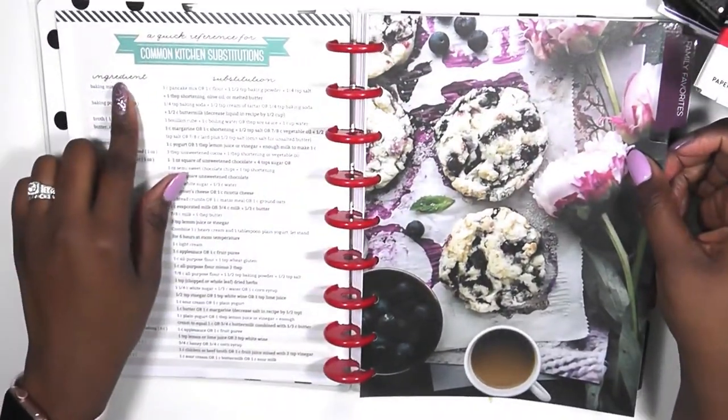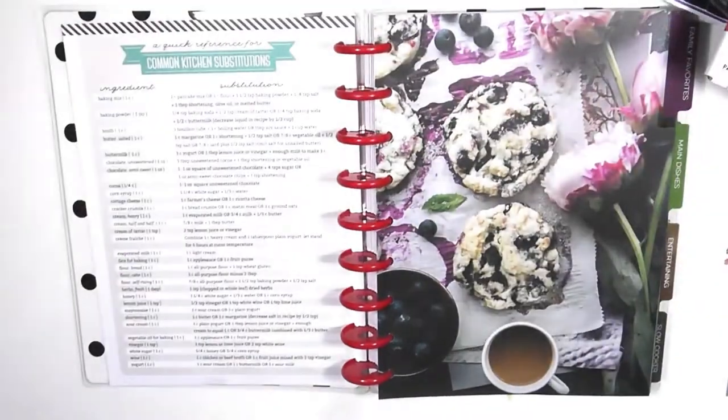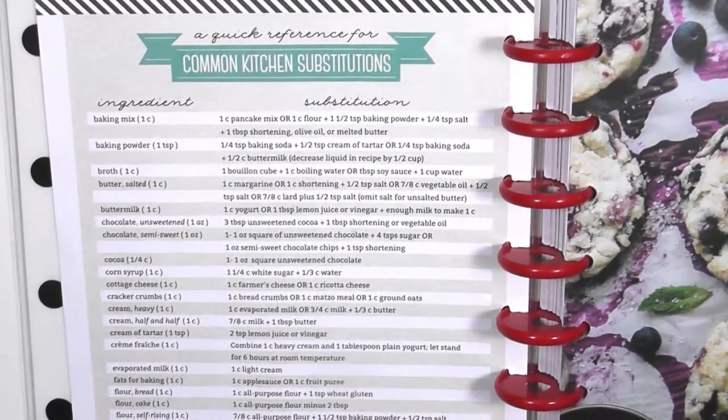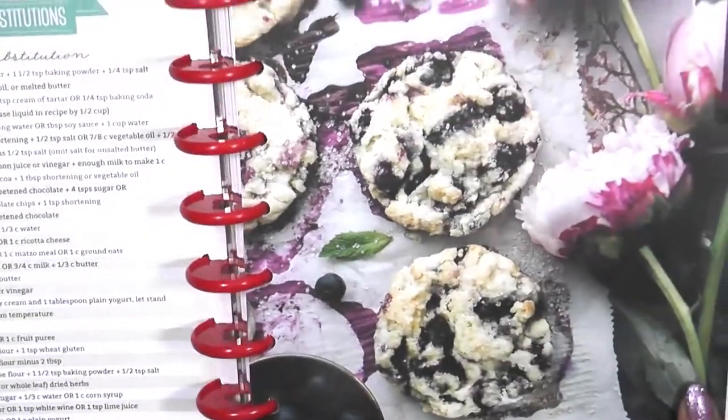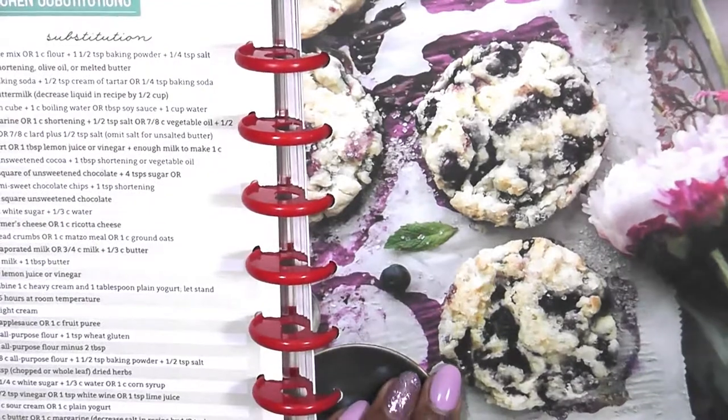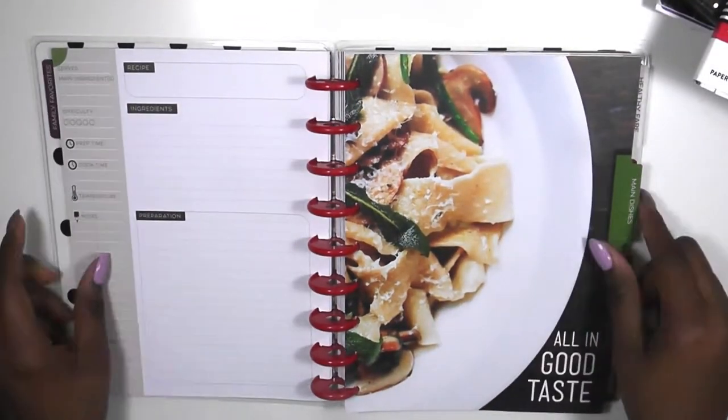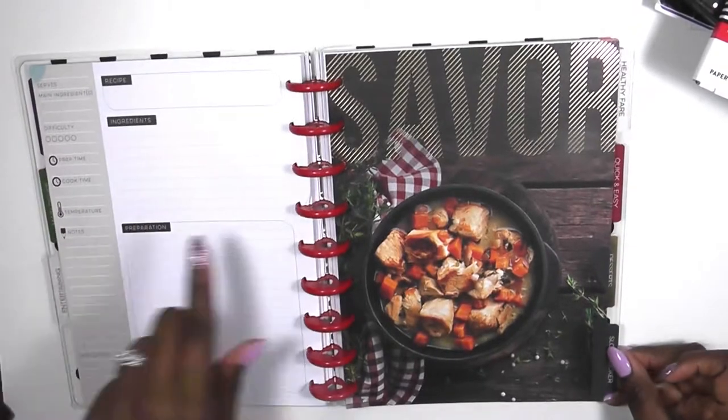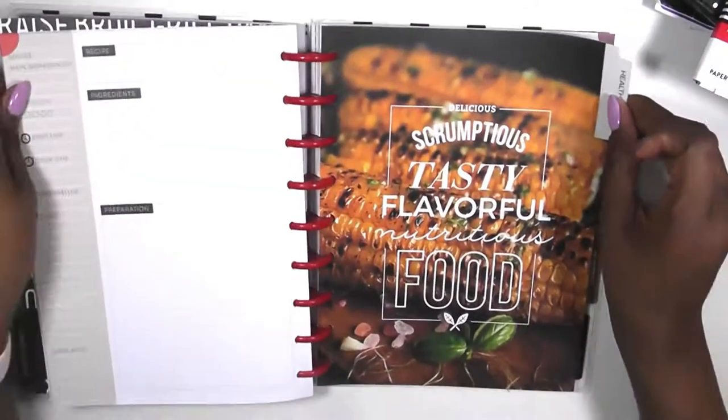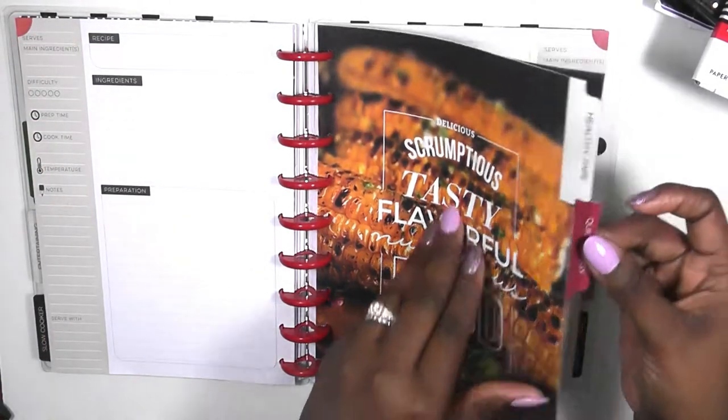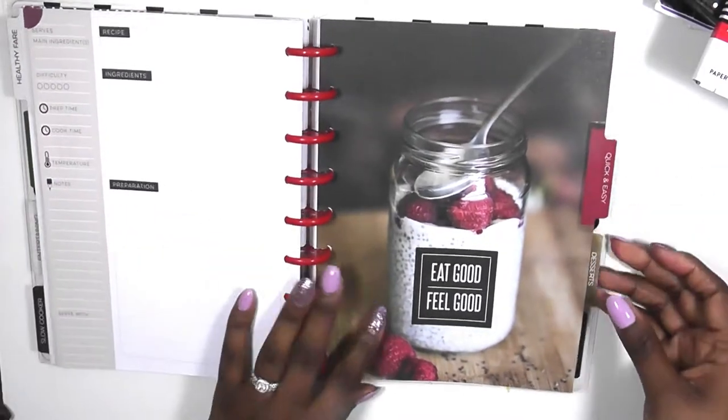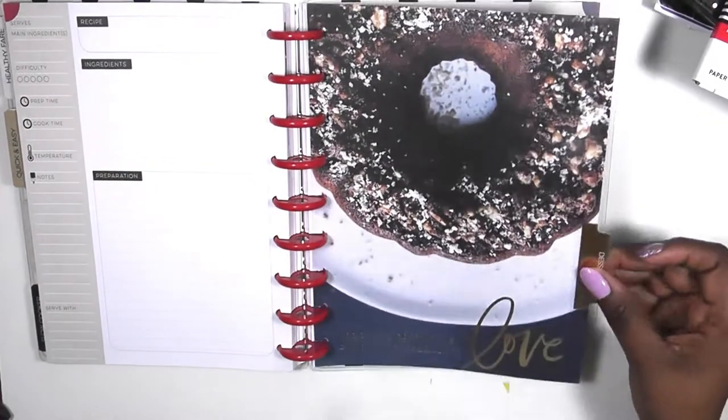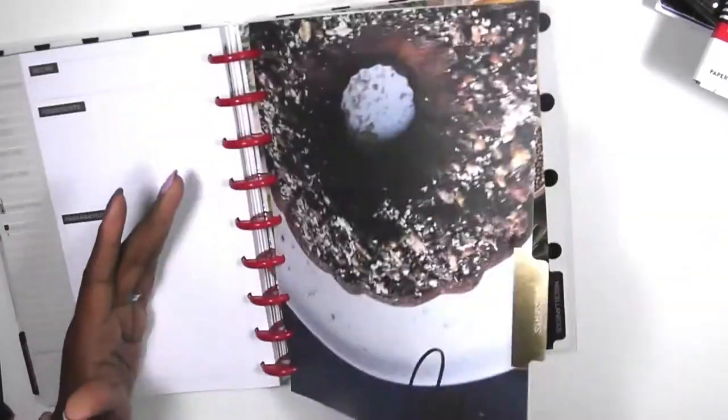Okay, so the first thing it comes with is a common kitchen substitution. Then it has your family favorites, main dishes, entertaining, slow cooker, healthy fare, scrumptious, tasty, flavorful, nutritious food, quick and easy, eat good feel good, desserts with this beautiful chocolate bundt cake, and the secret ingredient is one heaping teaspoon of love. I love that.